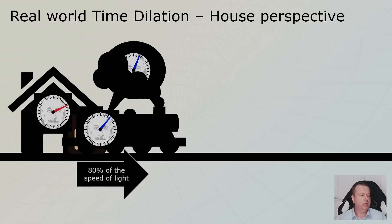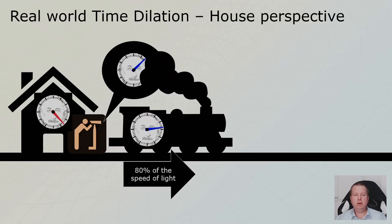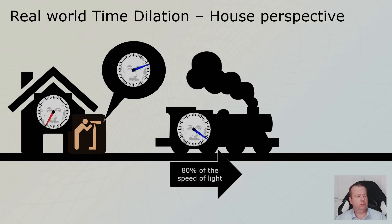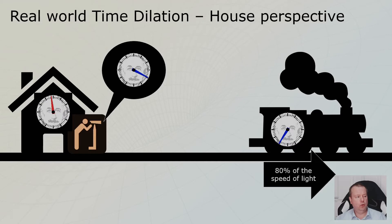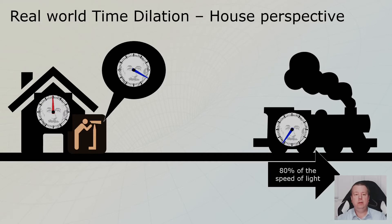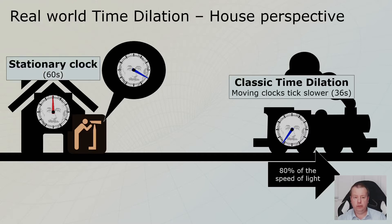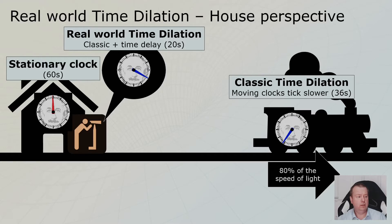And I showed you two animations. This was the first one and the clock in our house traveled 60 seconds in time. And we saw that the number of seconds passed on the train's clock is not 60, but it's 36. And we talked about that the number of seconds on the clock which you see in the telescope is even less, it's 20 seconds.